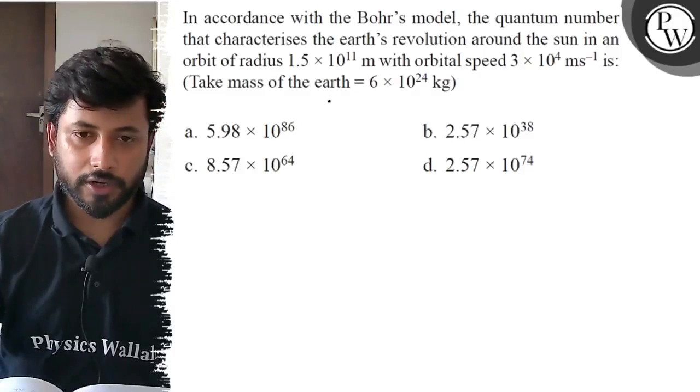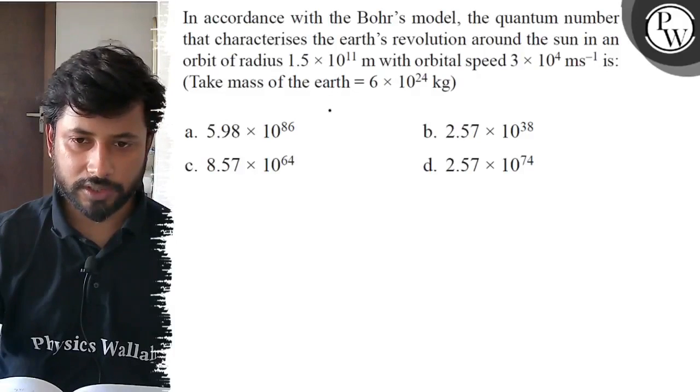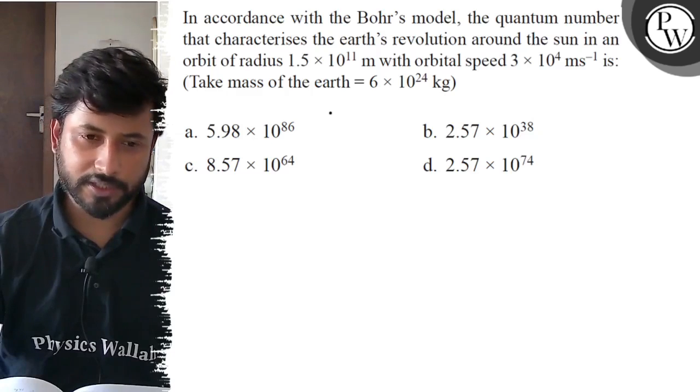Hello, let us see this question. In accordance with the Bohr's model, the quantum number that characterizes the Earth's revolution around the sun in an orbit of radius 1.5 × 10^11 meter with orbital speed of 3 × 10^4 meter per second.